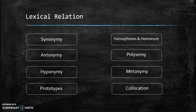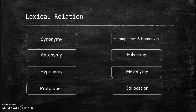Lexical relation is divided into eight topics: first is synonymy, then antonymy, hyponymy, prototypes, homophones and homonyms, polysemy, metonymy, and collocation. Let's begin with the first subject.